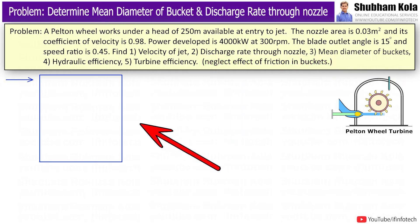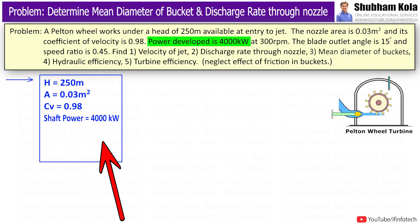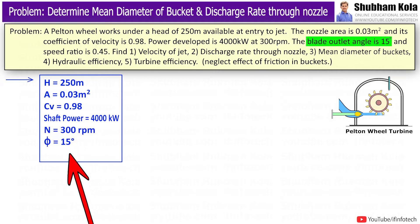So here firstly, I will write given data where available head H is 250 m, nozzle area A is 0.03 m², coefficient of velocity CV equal to 0.98, shaft power is 4000 kW, speed is 300 rpm, blade outlet angle 15 degree, speed ratio i.e. bucket speed by velocity of jet is 0.45.